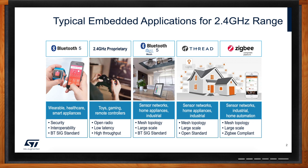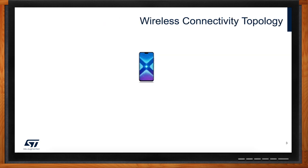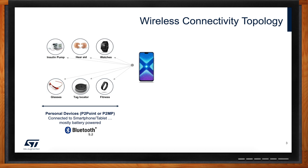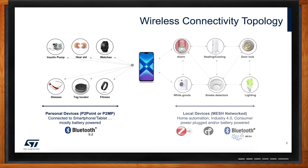Topology discussion starts with the screen and display — this is where the user experience happens and where the end user interacts. It could be a smartphone, computer, tablet, or TV. We see two different types of topologies. The first is point-to-point, where devices connect directly to the interface or display showing the data, and most likely Bluetooth Low Energy will be used for that, though it's not limited to it.